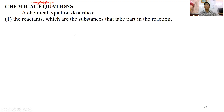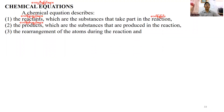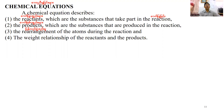Here we see they have to take back the rearrangement that you can see the kind of approach in the reaction. You can see the product and the rearrangement of the agenda during the reaction. You need to look at the chemical equation and the weight relationship of the reactants and the product.